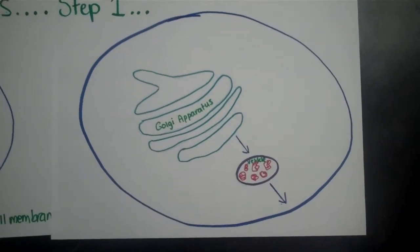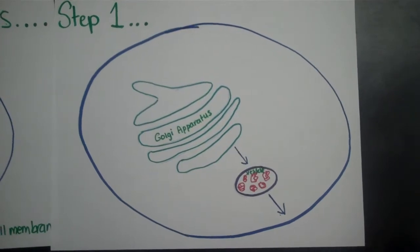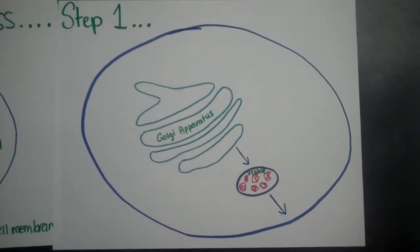Step 1: The vesicle detaches from the Golgi apparatus and is moved by the cytoskeleton towards the cell membrane.